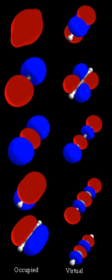A molecular orbital can be used to represent the regions in a molecule where an electron occupying that orbital is likely to be found. Molecular orbitals are obtained from the combination of atomic orbitals, which predict the location of an electron in an atom. A molecular orbital can specify the electron configuration of a molecule, the spatial distribution and energy of one or one pair of electrons. Most commonly a MO is represented as a linear combination of atomic orbitals — the LCAO-MO method — especially in qualitative or very approximate usage.